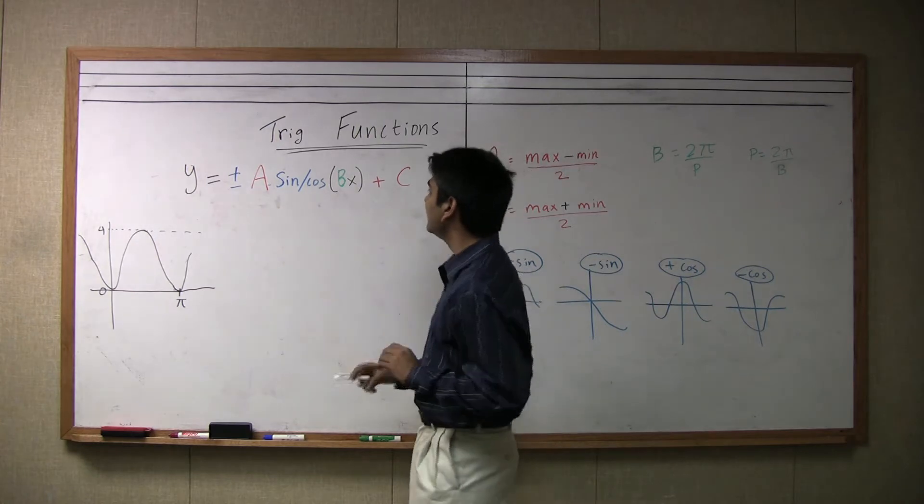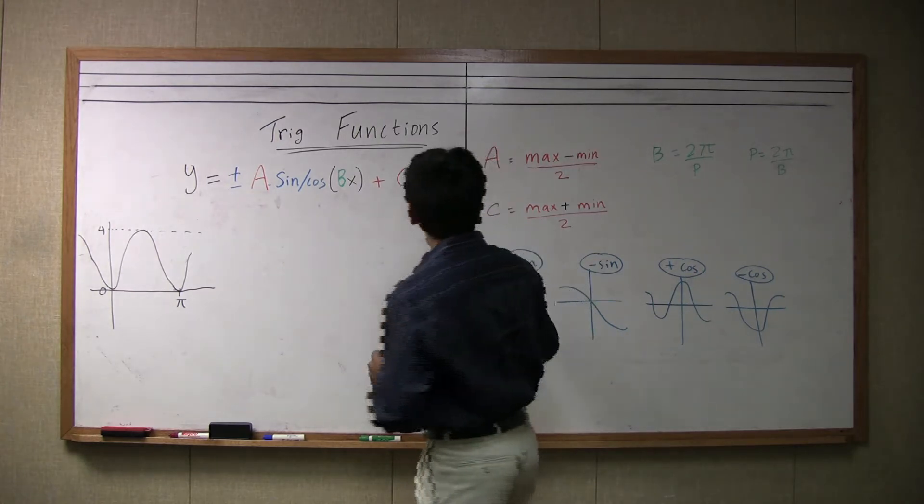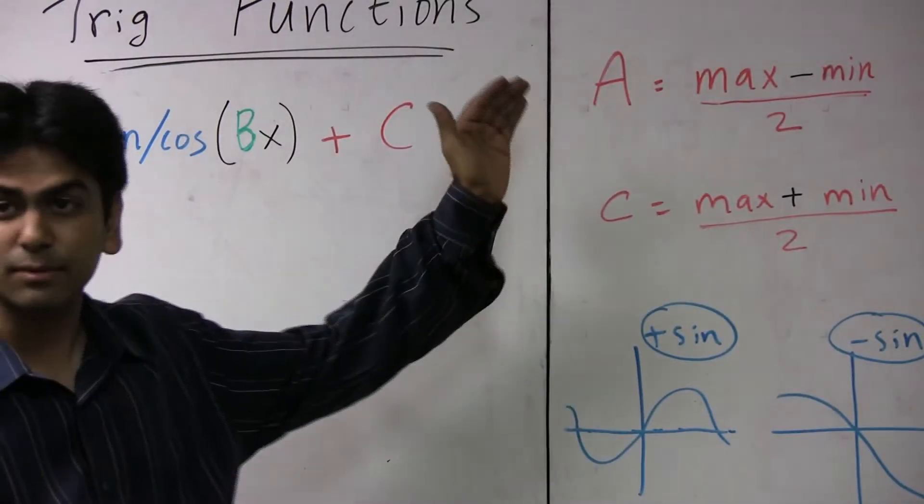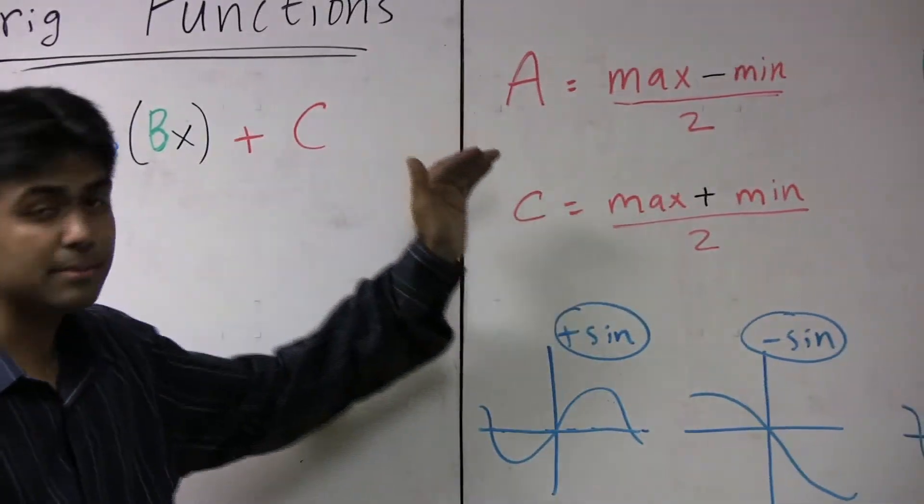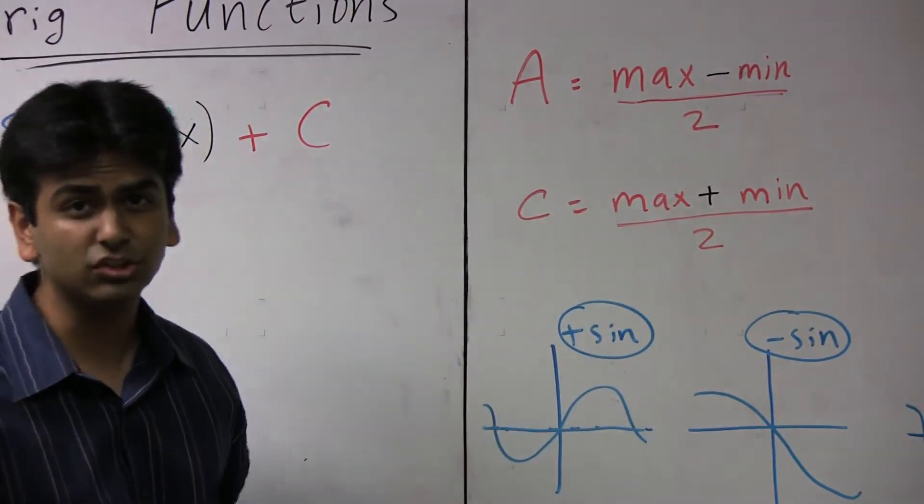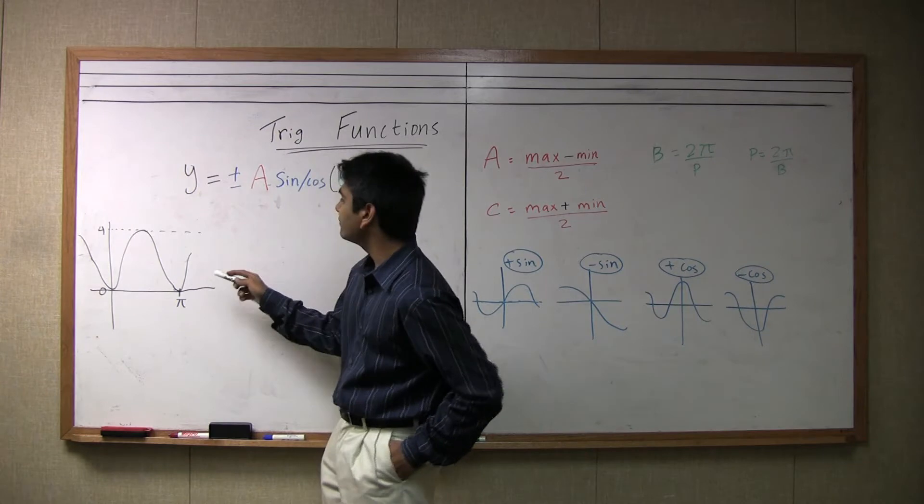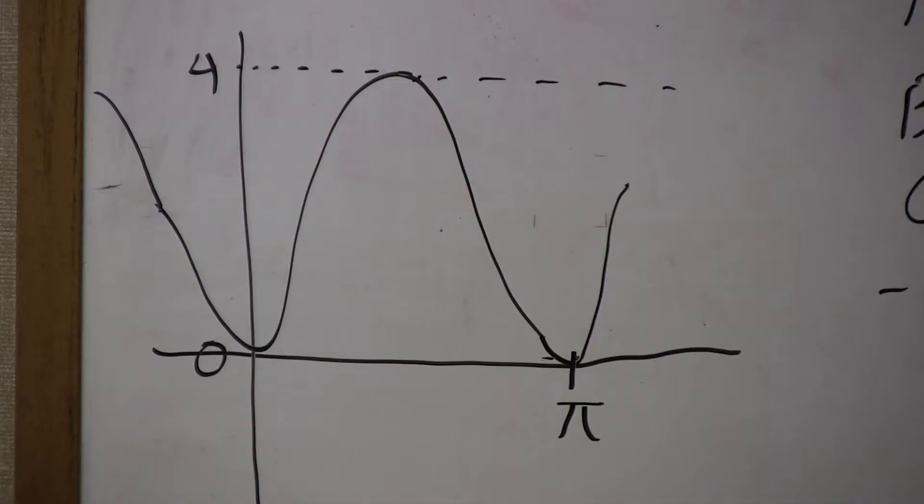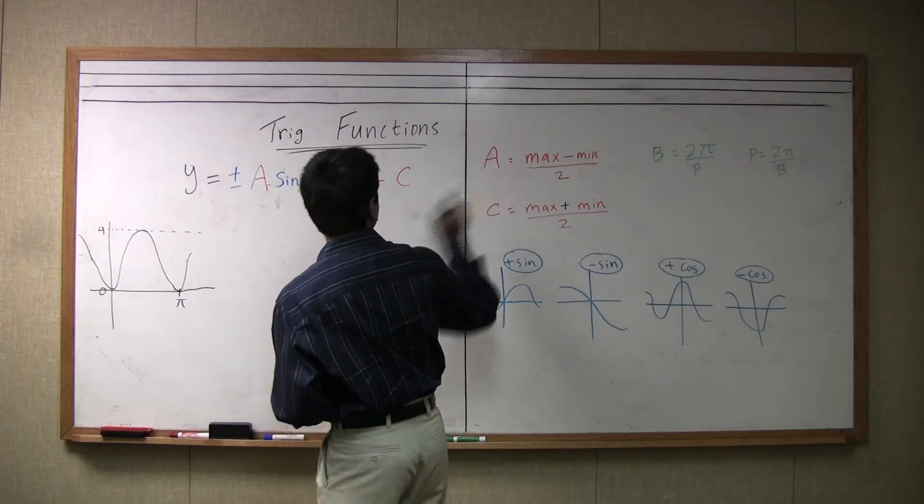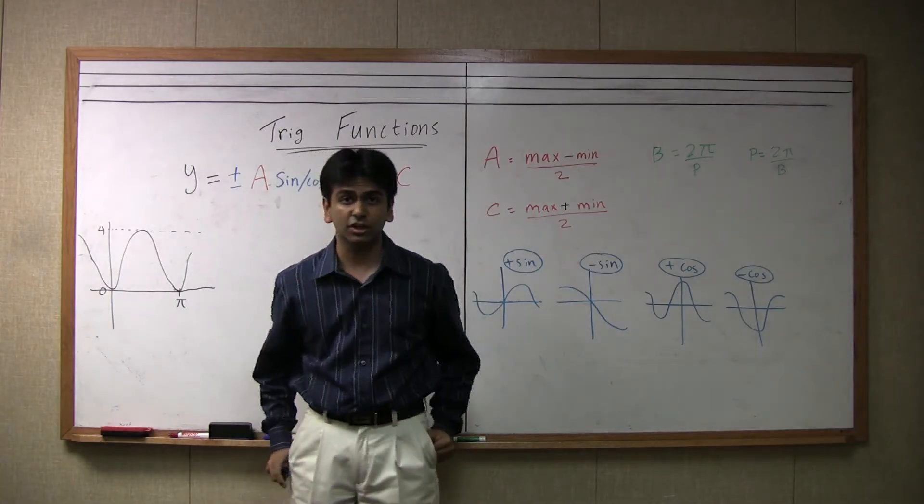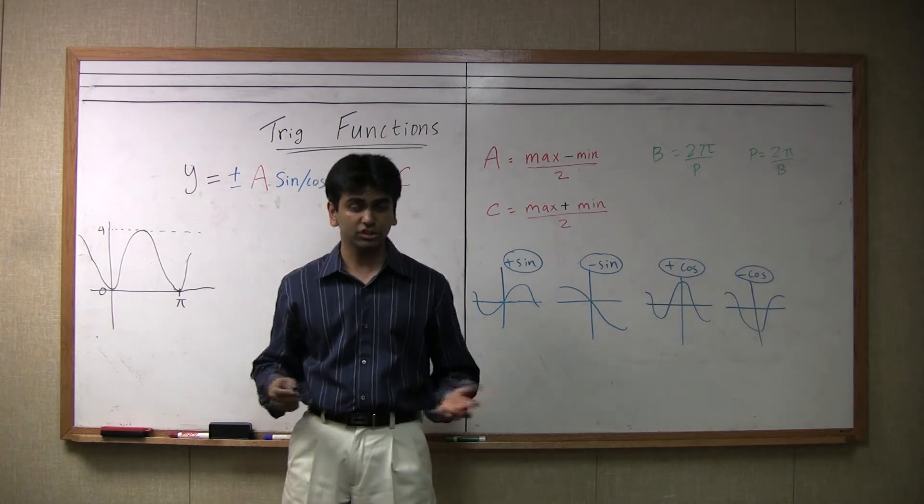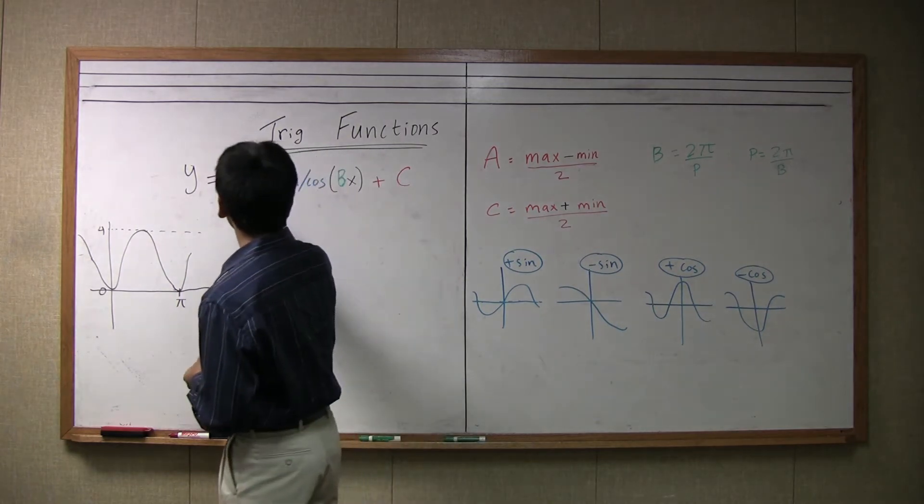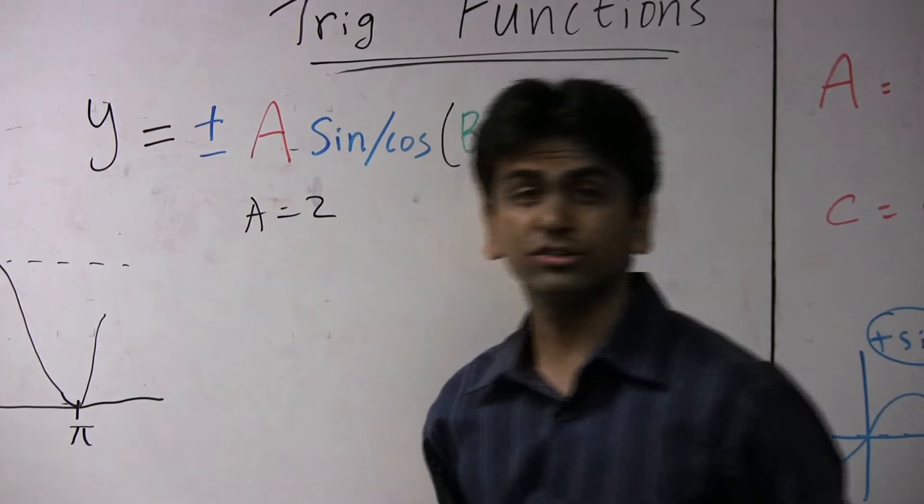So first let's look at the a's. a means amplitude. The amplitude is defined as the maximum y-value minus the minimum y-value divided by two. So if we look again at this graph, the highest y-value that this function ever reaches is four. The minimum it ever reaches is zero. So a clearly is four minus zero divided by two, which is two. So from this we know that our a equals two.